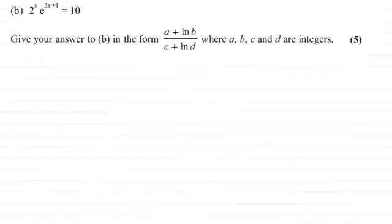Hi there. Now for this question, we're asked to solve this equation: 2 to the power x times e to the power 3x plus 1, which equals 10. And give your answer to part b in the form a plus the natural log of b, all divided by c plus the natural log of d, where a, b, c and d are integers. And this is for five marks.